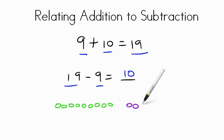...and ten one, two, three, four, five, six, seven, eight, nine, ten equals nineteen when we combine them. If we have our nineteen our total and we take away nine of them just all gone there what's left over?